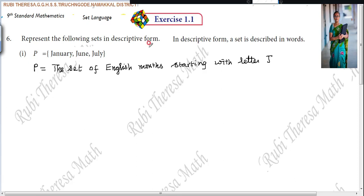Described in words. Shall we go to the next subdivision? Second one: Q equals 7, 11, 13, 17, 19, 23, 29. First, you should identify the number. What type of number is it? They have given in roster form. You have to write it in descriptive form. What type of number is it?